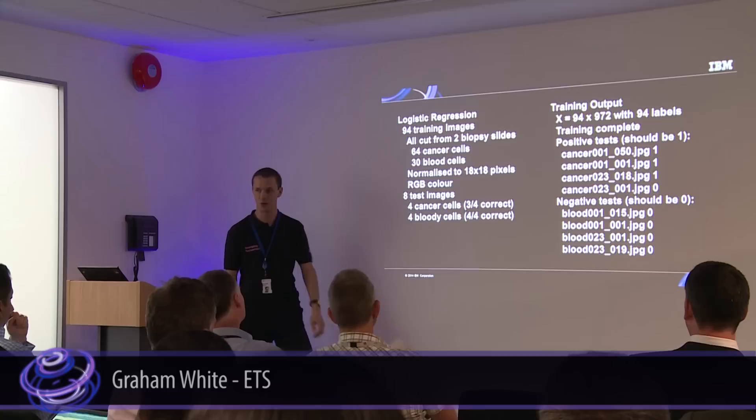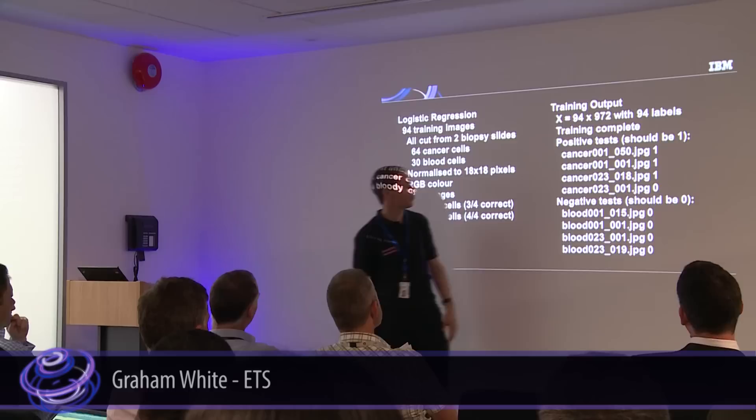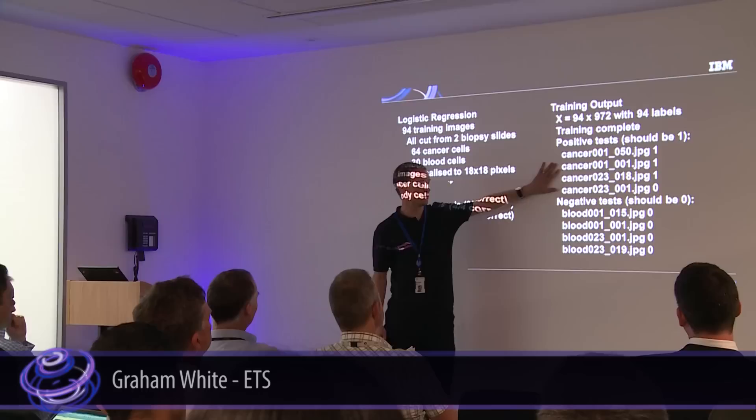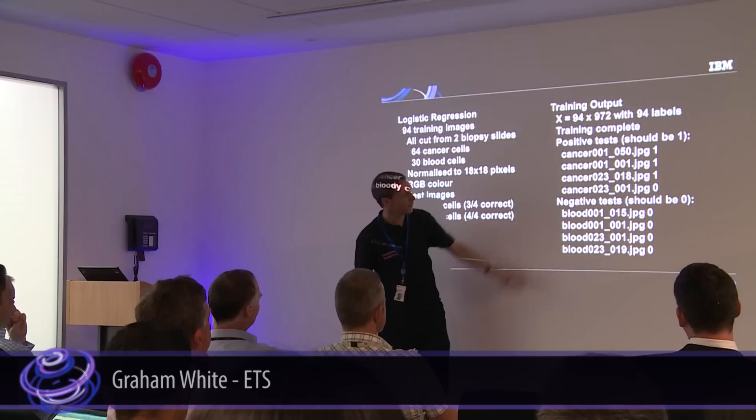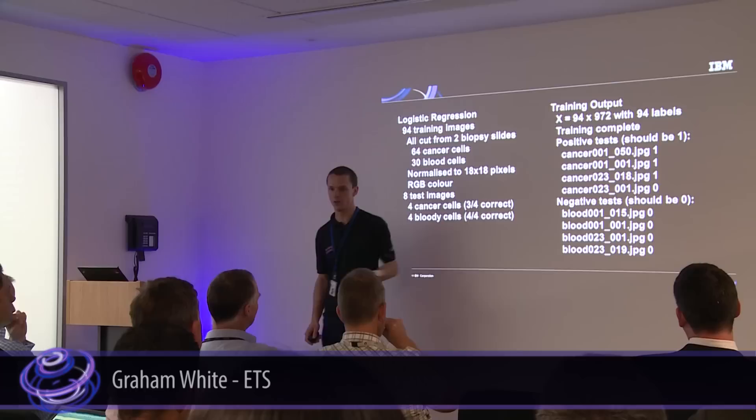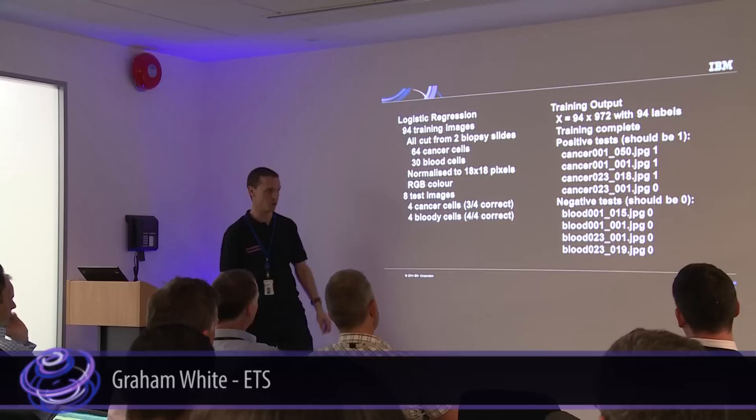Running the test data through the algorithm, we generated two output types. There were some positive tests — the cancerous cells — and we got three out of four of those correct. And for the blood cells, we got all of those correct in our small sample set. As I said, it's a really small set, so it's statistically insignificant. We need to ramp that up so that we can really say how good it was.